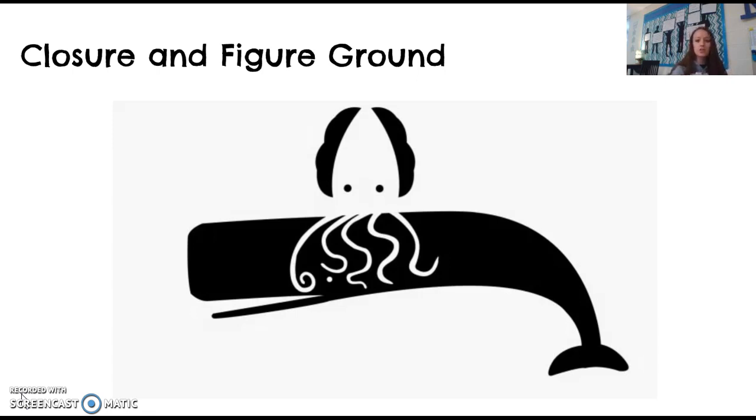This also demonstrates figure ground. Figure ground is where your brain focuses on one object, and that becomes the figure, while everything else becomes the background. When you're focusing on that figure, everything else just becomes the scene, and you miss out on what's in the scene. Here, depending on what you saw first—when I looked at that, I first saw the squid, so I failed to see that there was actually a whale in the picture.